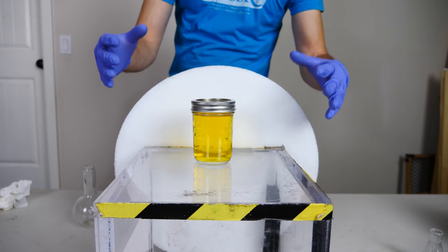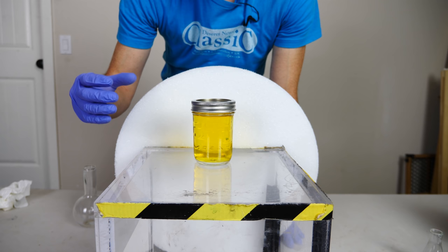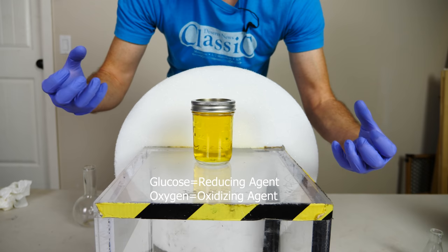Okay everyone, today I'm going to be showing you a chemical stoplight experiment. Now in this experiment, we're going to be seeing a battle between oxygen and glucose. Oxygen will turn it green, glucose will turn it yellow, with an intermediate being red.